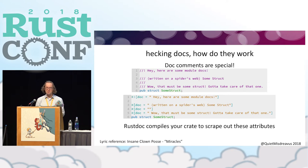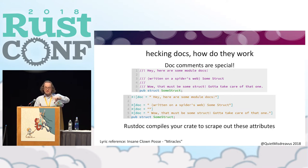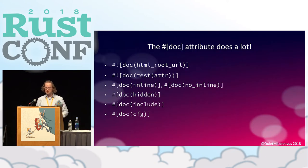It's worth noting that Rustdoc leans on the compiler a lot to run through your crate and get all the information out of it. The doc comments you may have seen are actually specially recognized by the compiler — they're effectively aliases for doc attributes. The compiler will look at doc comments and convert them into the doc attribute form. That bottom section is basically what Rustdoc sees when it runs on your crate. And the doc attribute itself has a few overloaded things — I mentioned one earlier with the doctest attribute, but there are several others.